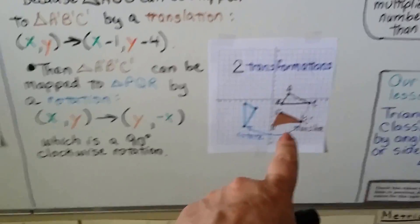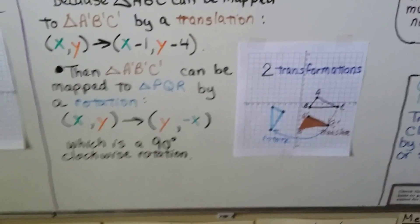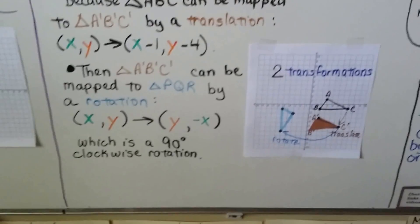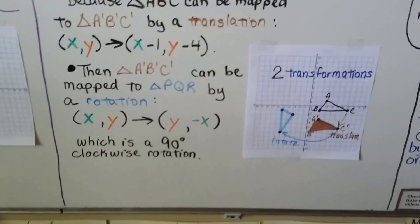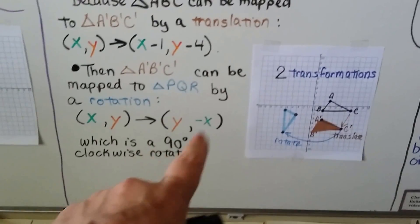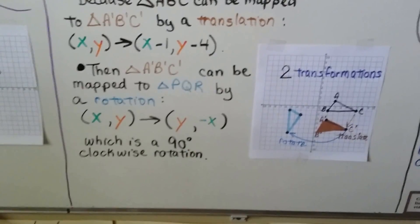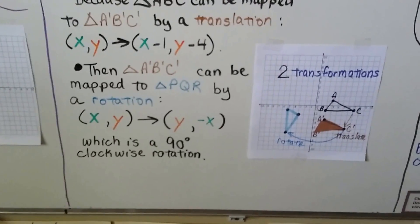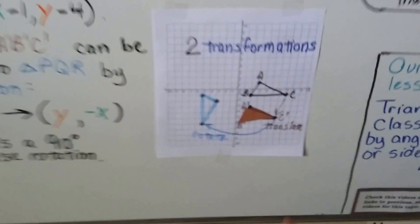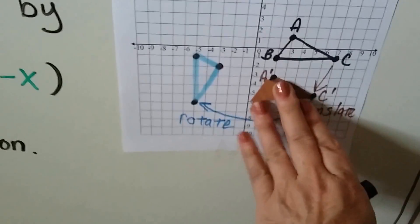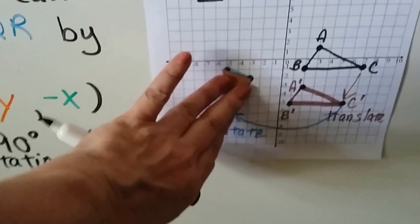Then, from A'B'C', it can be mapped to triangle PQR by a rotation. We would do, it would map to y, negative x. So these swapped places and the x became a negative and that's a 90 degree clockwise rotation. So, from the translation A'B'C', it rotated and went here.